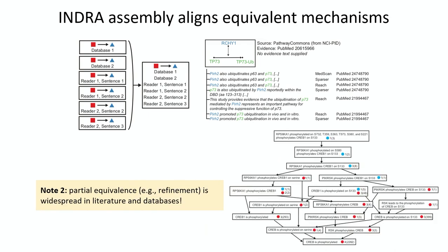There's a very special type of partial overlap that we see quite a lot across literature and databases — what we call hierarchical refinement — the exact same mechanism being described at different levels of detail. INDRA can actually automatically recognize these relationships through ontologies and create these kinds of refinement graphs that allow us to then resolve these redundancies.